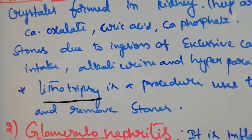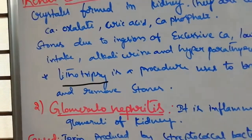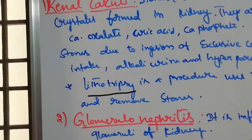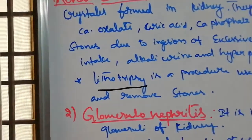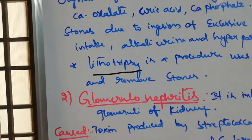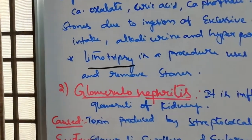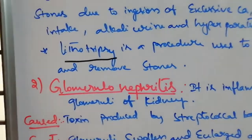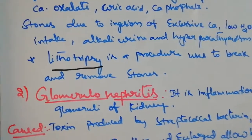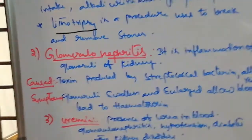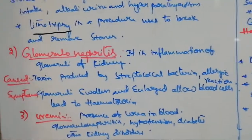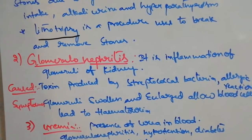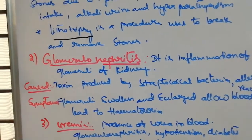Kidney stones are formed from calcium oxalate, uric acid, and phosphates. The main cause is excess calcium. Low water intake leads to uric acid crystal formation.